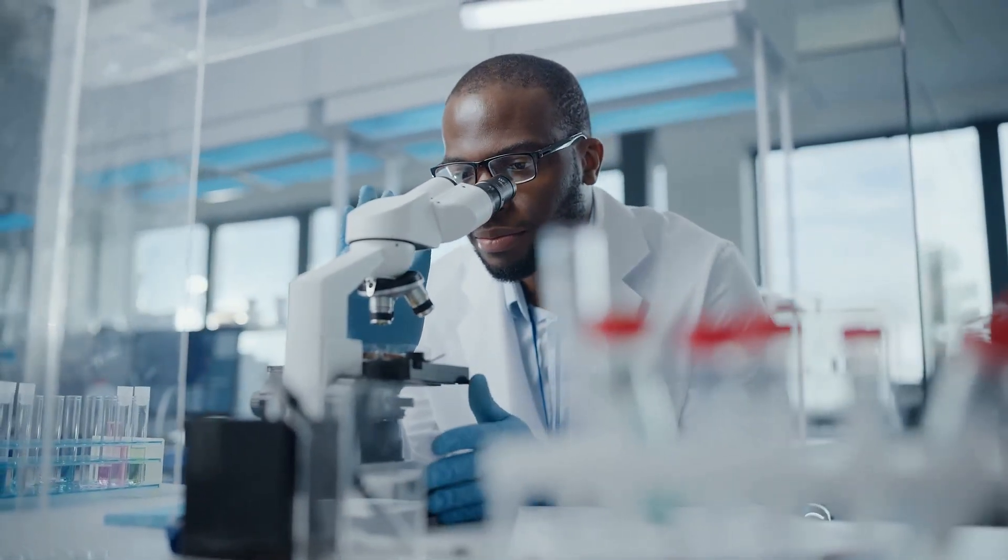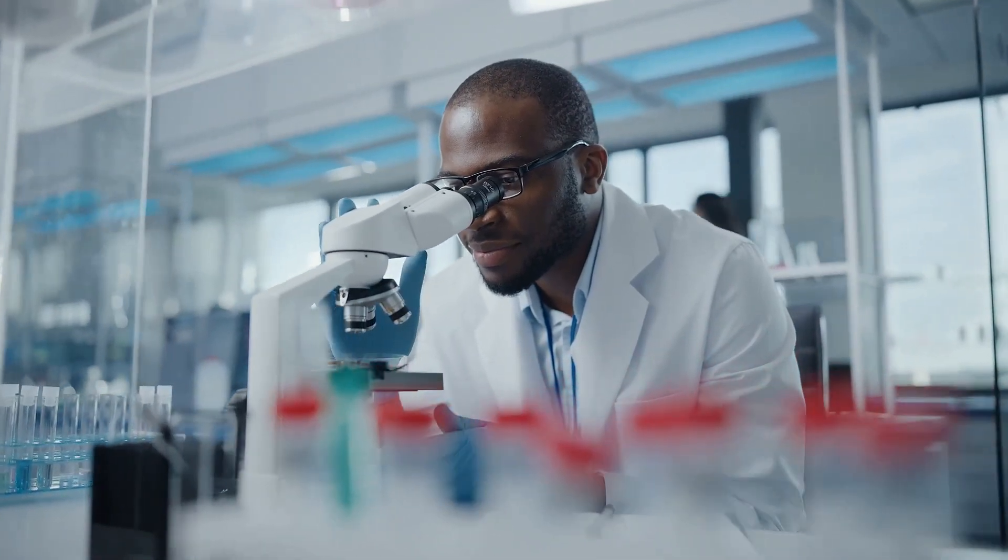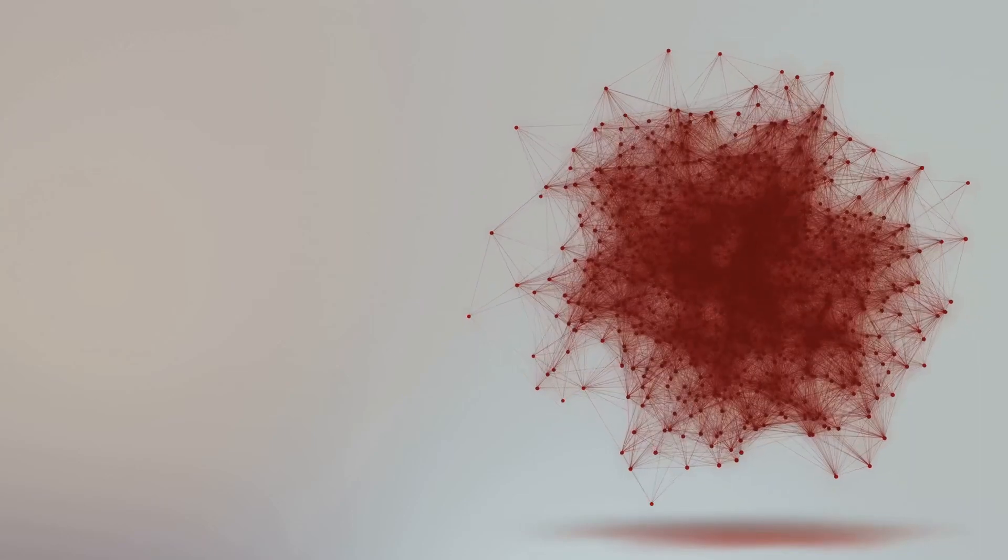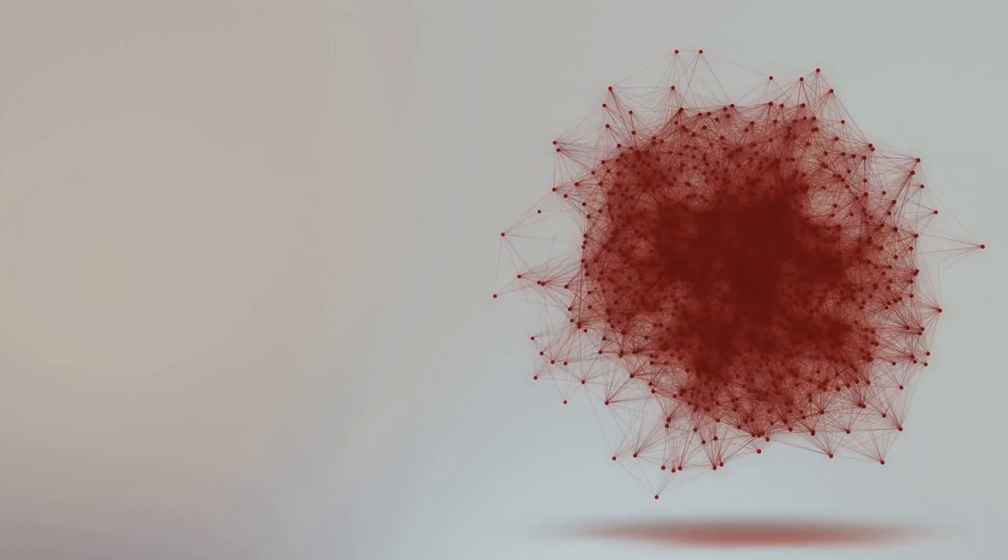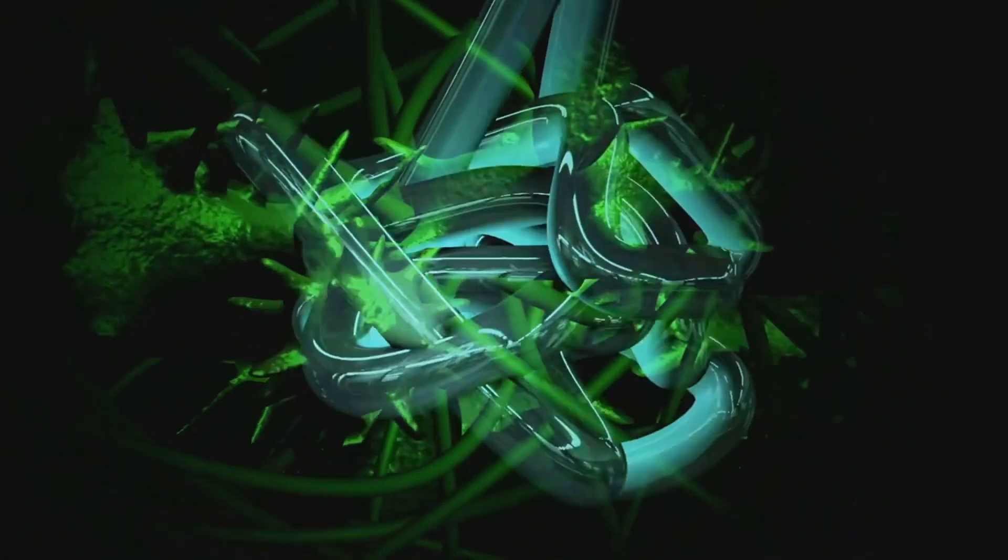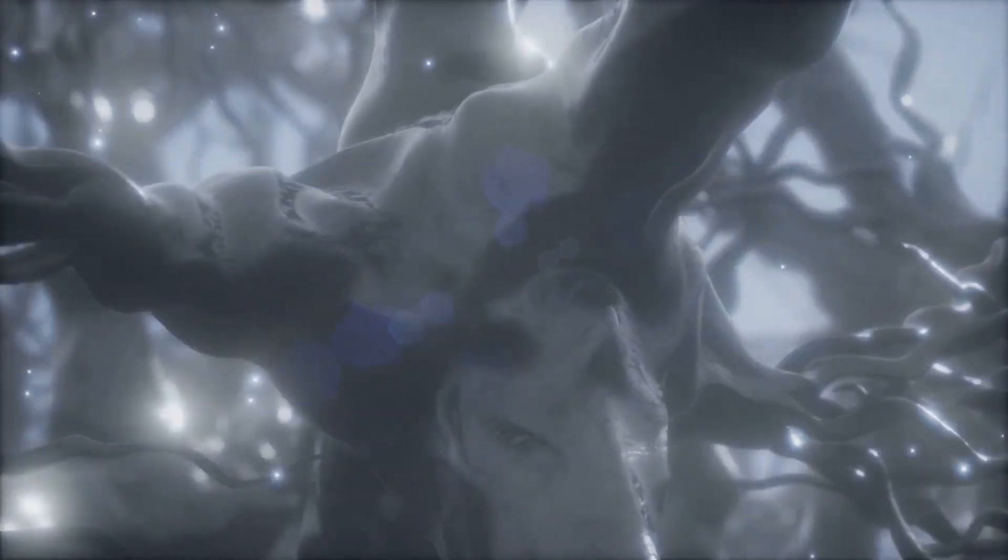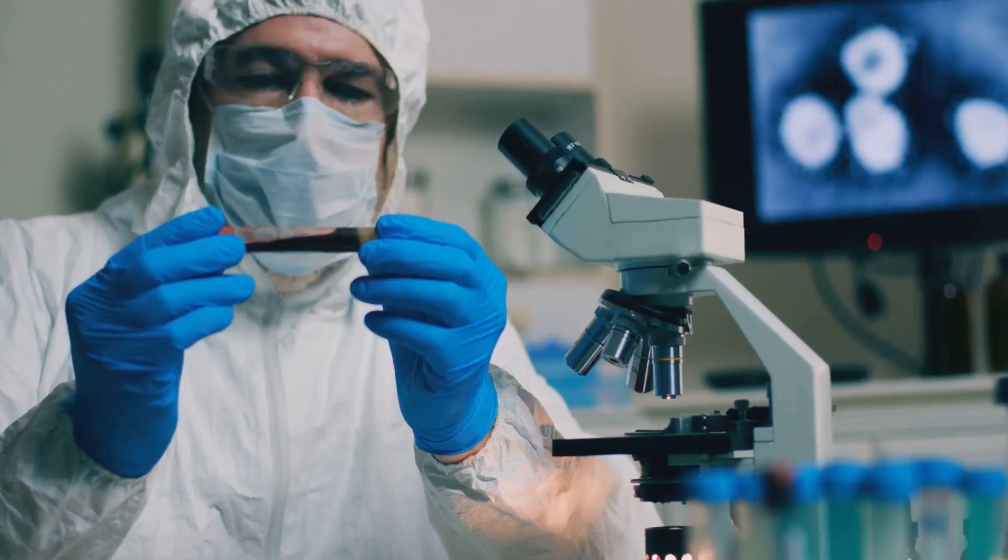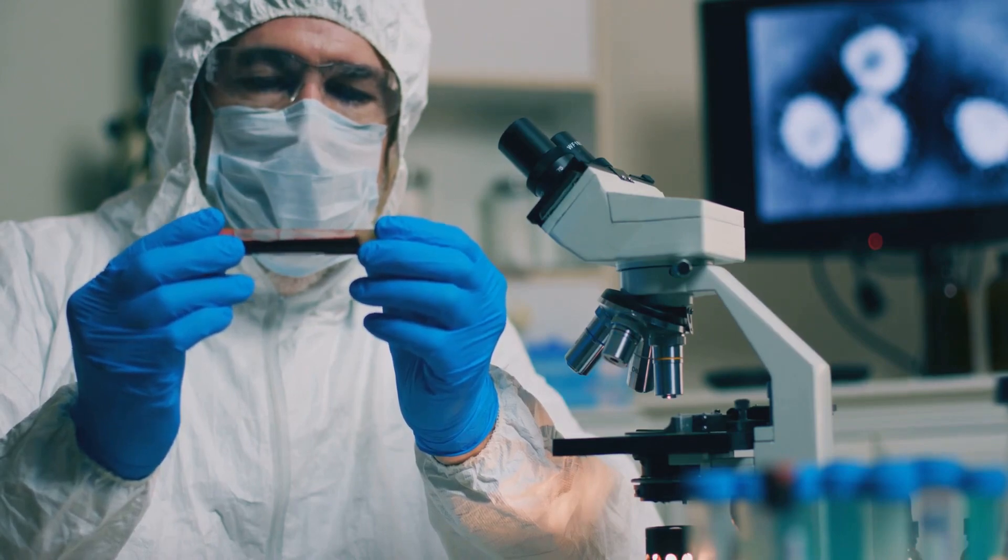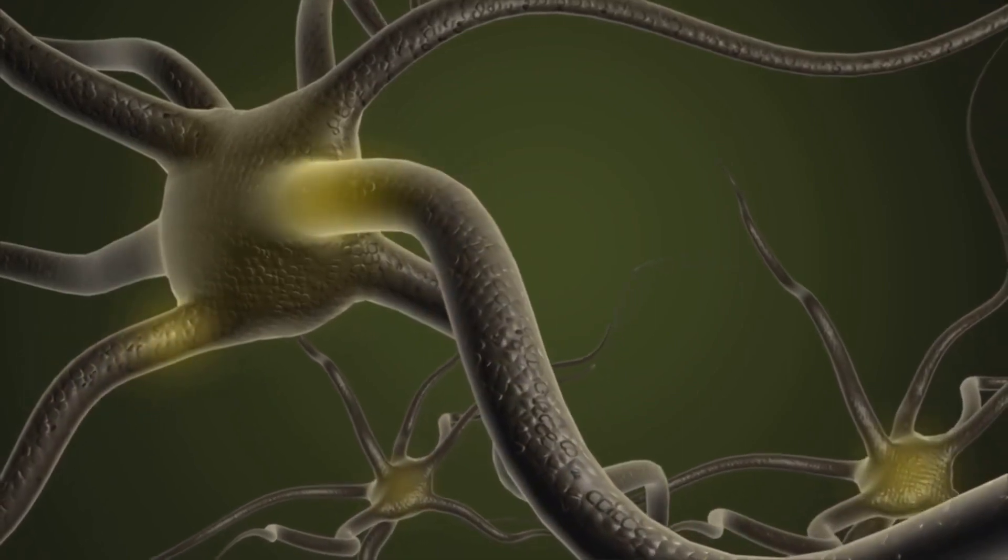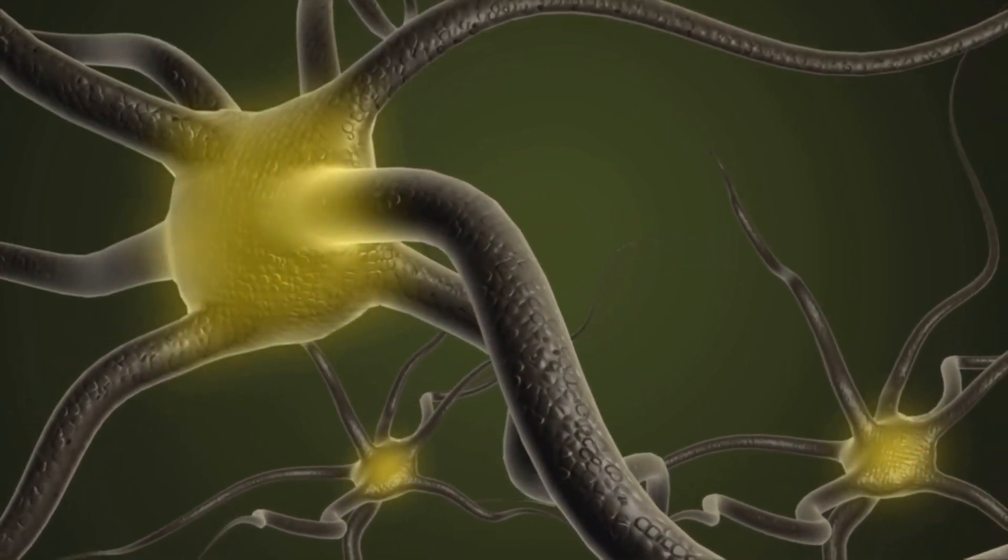The dysfunction of the ER has been implicated in a startlingly wide range of diseases, highlighting its central role in maintaining cellular health. When this cellular factory malfunctions, the consequences can be severe, impacting various tissues and organ systems. Neurodegenerative disorders such as Alzheimer's, Parkinson's and Huntington's diseases are characterized by the accumulation of misfolded proteins in brain cells. ER stress and the UPR are thought to play a significant role in this process. Chronic ER stress can lead to neuronal dysfunction and cell death, contributing to the progressive nature of these devastating diseases.